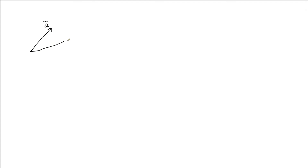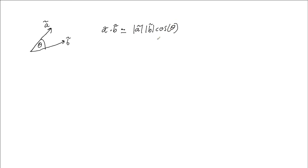In this video I'm looking at the scalar product of vectors, or the dot product. The scalar product is defined as: if you have vector A and vector B and you know the angle between them, the dot product of A and B is the product of the magnitudes of those two vectors multiplied by the cosine of the angle between them. It's called the scalar product because you get a scalar as your result — the magnitude of A is a scalar, the magnitude of B is a scalar, and cos of an angle is also a scalar, so three scalars multiplied together gives a scalar.